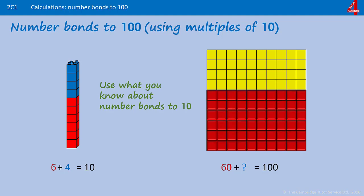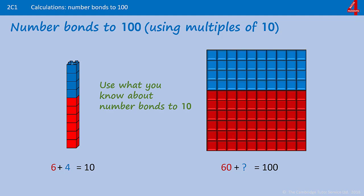Our 60 red blocks are on there. How many do we need to add? 10, 20, 30, 40 blocks. And if you compare those numbers to the number bonds to 10, 6 and 4 is 10, 60, add 40, is 100.